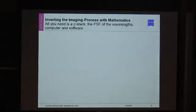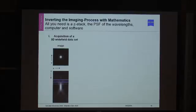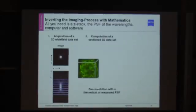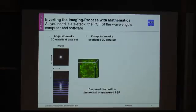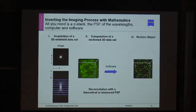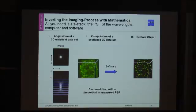To perform deconvolution, you basically need a Z-stack, a point spread function for the respective wavelength, a computer, and the appropriate software. You acquire a 3D widefield dataset — just a Z-stack on a widefield camera system — and then compute and deconvolve it with an algorithm that knows the theoretical or experimentally measured point spread function. By that, the system can remove out-of-focus light, and the image becomes much more crisp compared to conventional widefield.